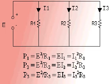For R1, P1 is equal to E squared divided by R1, or E times I1, which is equal to I1 squared times R1. For R2, the power is P2, which is equal to E squared divided by R2, which is equal to E times I2, which is equal to I2 squared times R2.